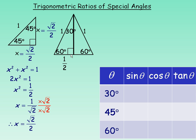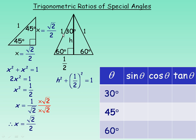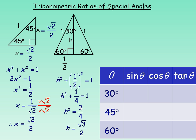The remaining side is the height H, which we need to find the trig ratios. Using Pythagoras' theorem: H squared plus one half squared equals 1 squared. Squaring one half gives one quarter, so H squared equals 1 minus one quarter. Thinking of 1 as four fourths, four fourths minus one quarter equals three quarters. So H squared equals three quarters. Taking the square root of both sides, the square root of 3 stays as root 3, and the square root of 4 is 2. So H equals root 3 over 2.